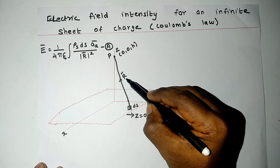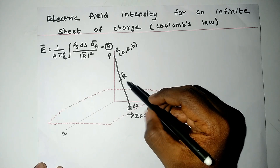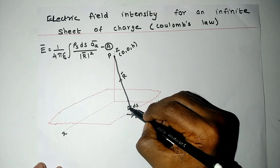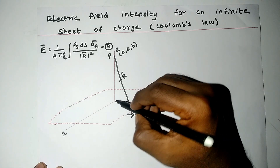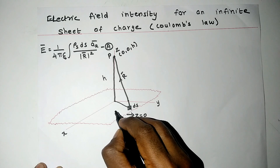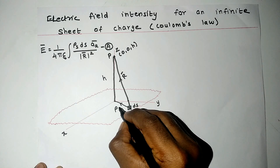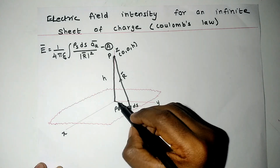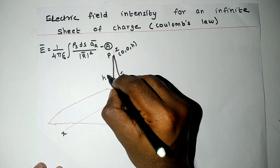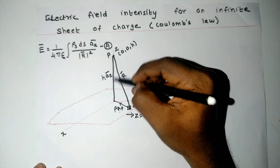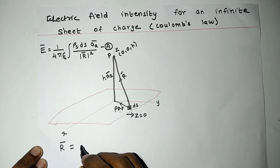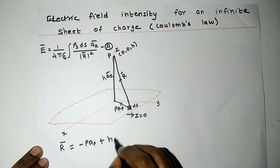This is our r vector. To find out the value of r, we have to choose the alternate path from ds to the point P: start from ds, reach the origin, then from the origin reach point P. This height is h and this distance is ρ. Multiplying a_ρ with ρ gives the vector representation of that line. Similarly, h·a_z is the vector representation of the vertical line. So we can write the expression for r vector: r vector equals −ρ·a_ρ + h·a_z.